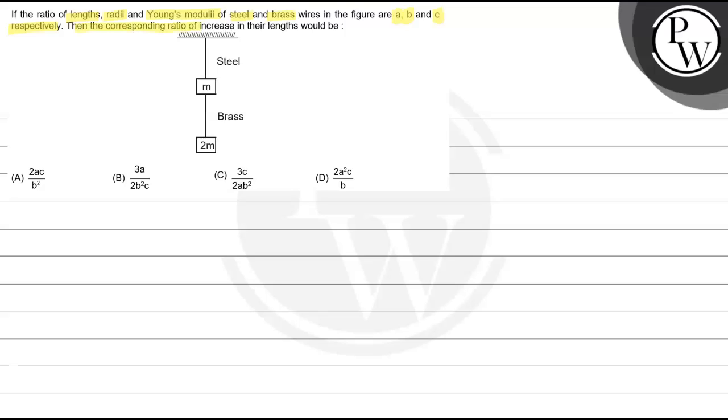then the corresponding ratio of increase in their lengths would be: 2ac by b square, 3a by 2b square c, 3c by 2a b square, and 2a square c by b.